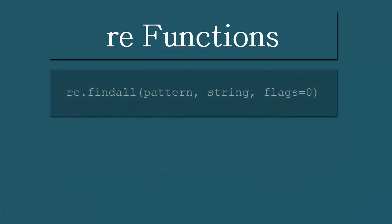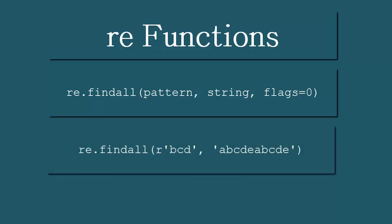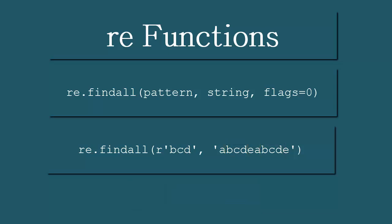The findall function works similarly but it returns a list of matches. For example, this call would return a list containing both matches. If no match is found, findall will return an empty list. Now let's take a look at the two simple functions I've written and then our examples.